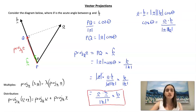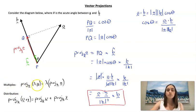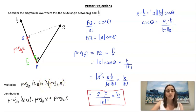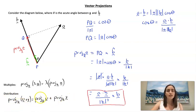Two properties to know before jumping into examples. First, projections are scalar-compatible: the projection of λA onto B equals λ times the projection of A onto B, where λ is a scalar. Second, projections are distributive: the projection of (U + V) onto B equals the projection of U onto B plus the projection of V onto B.